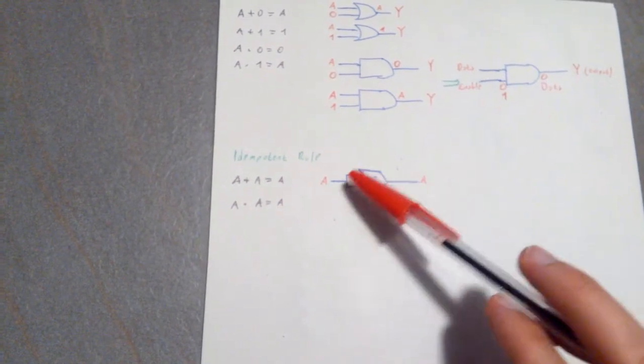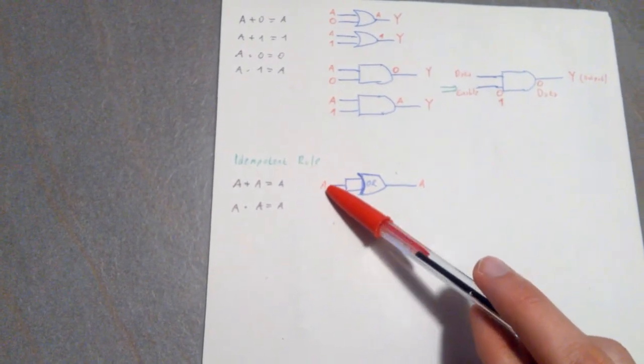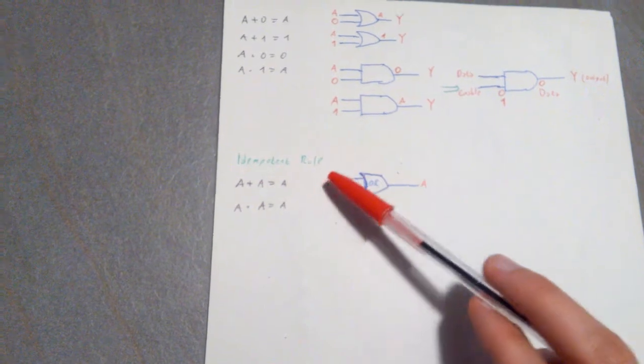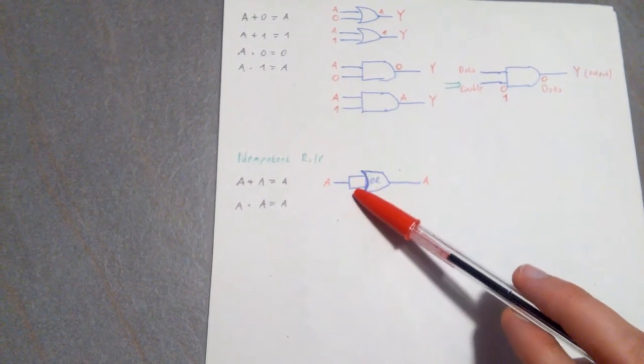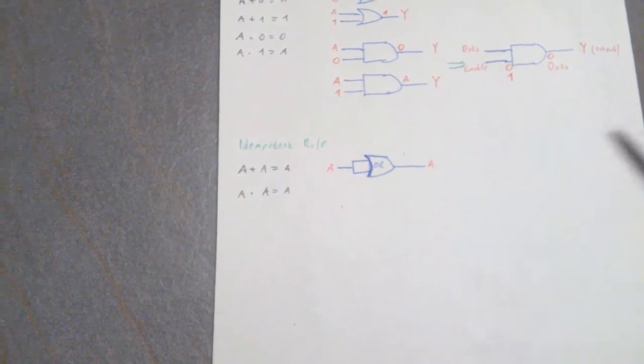Why? Well, because you would have A, so if A is 0, then you're going to have 0, 0, the output is 0. If you have 1, then you're going to have 1, 1, the output is 1. So as you can see, A, the output is A.